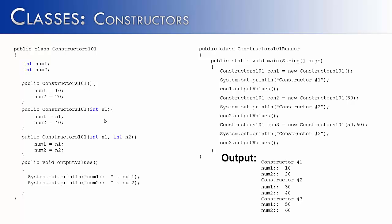Depending on how num1 and num2 behave in the class, this could give us completely different results for each object. Constructors bring many forms to objects and show how they set up objects to be ready for use inside of a program.